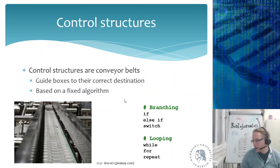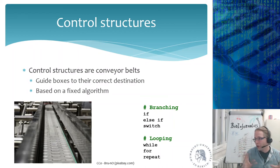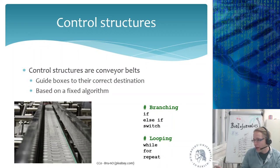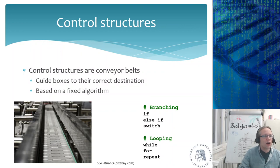We're going to take a short break, and when I come back we'll talk about control structures. In my mind, if variables are boxes, then control structures are conveyor belts — they bring a box from place A to place B, guiding boxes to their correct destination based on a fixed algorithm.